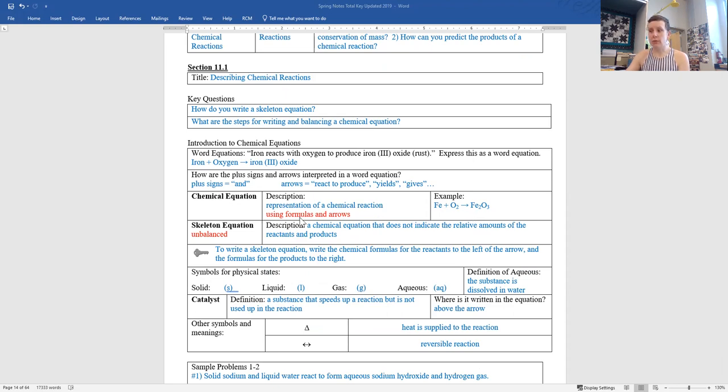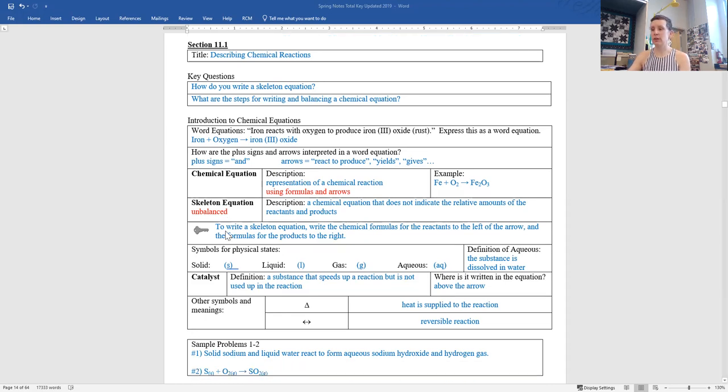So a chemical equation uses formulas and arrows and symbols. It does not use words. There's no compound names or substance names in a chemical equation. Real quick, where you have skeleton equation in your notes packet, please write the word unbalanced there. The definition from the book works, but it's just not super clear. An unbalanced equation, that's what we're looking for, for a skeleton equation. All the equations that we wrote yesterday during our activity are unbalanced equations.